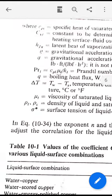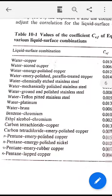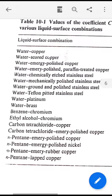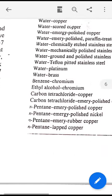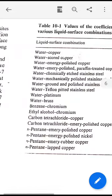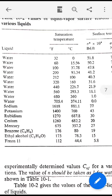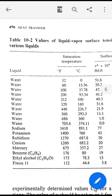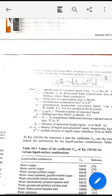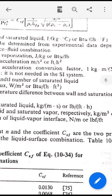The value of CSF, a table is available. For water-copper combination, CSF is 0.0130. For water scored copper it is different, for water platinum it is 0.0130, and so on. It is for a heater surface and liquid combination, CSF values are given. Sigma dash also, one table is there. This table gives liquid vapor surface tension for various liquids. Using these values, we can find out the heat flux in the nucleate boiling zone.